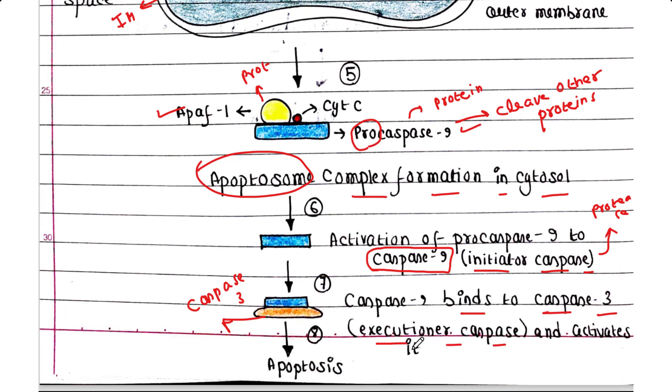This executioner caspase or caspase-3 is activated and will ultimately break down a number of proteins in the cell and will continue apoptosis.